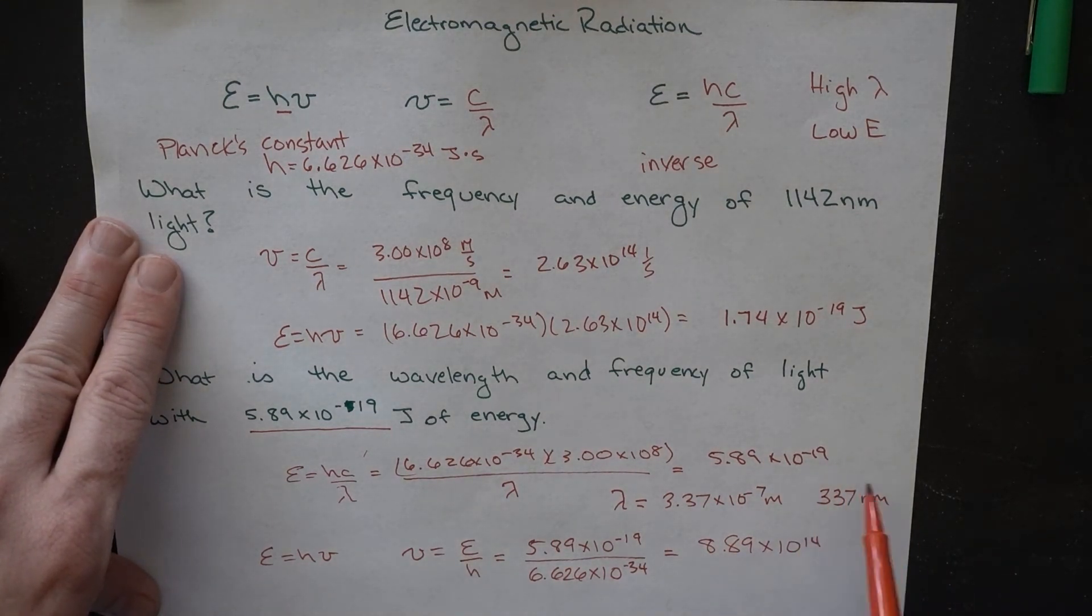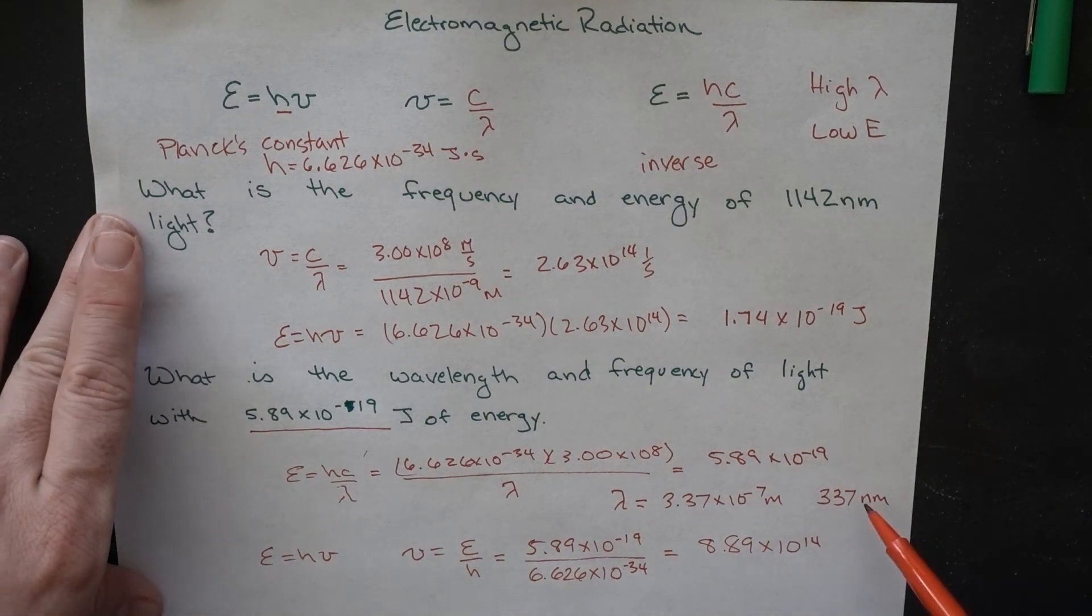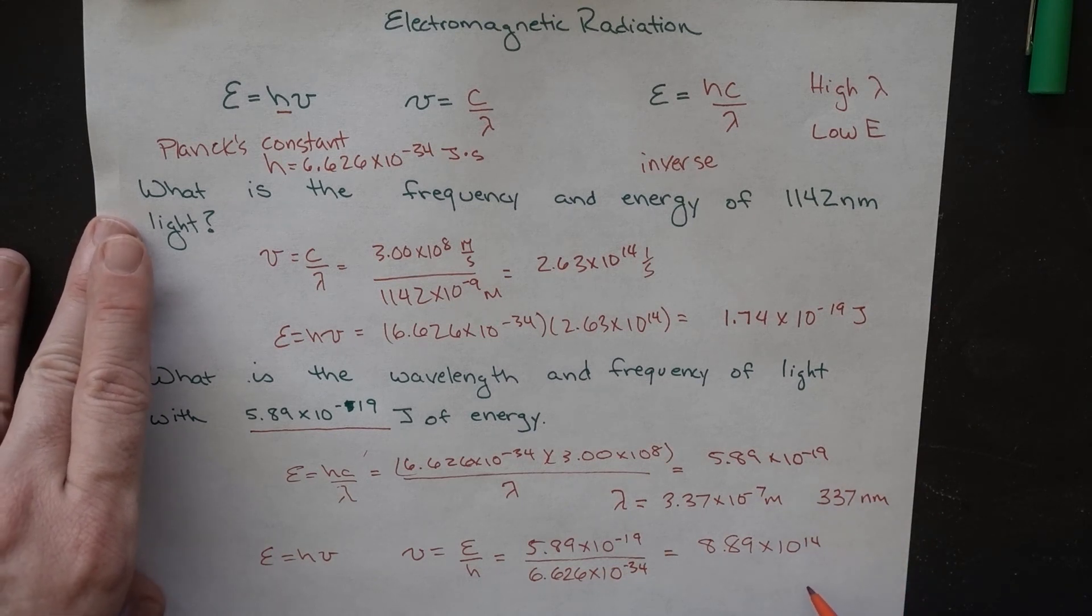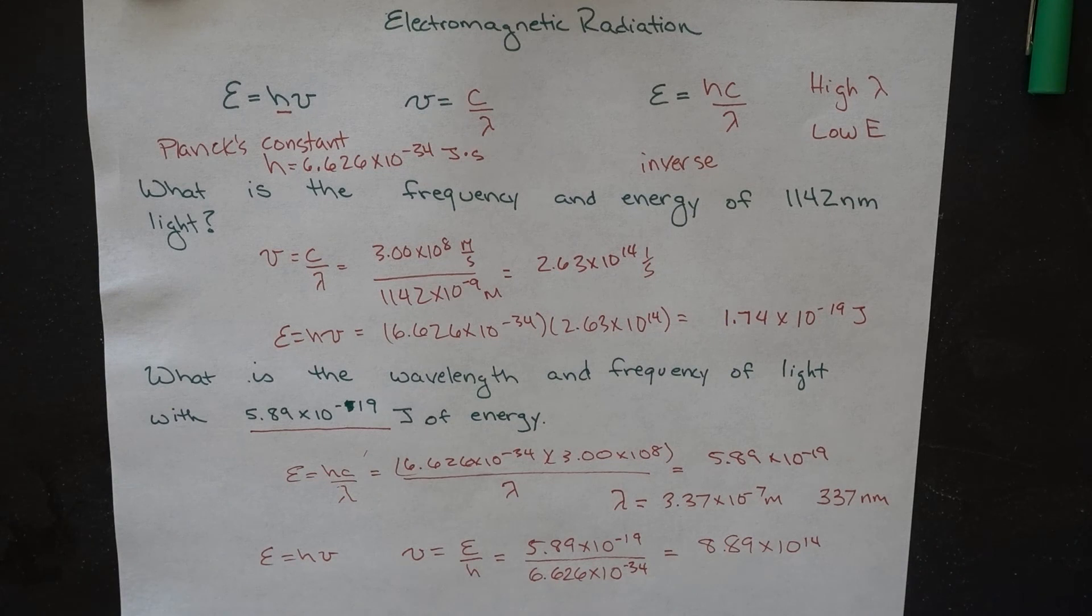Interestingly enough, this corresponds to something that is just shy of visible light. Visible light tends to go from about 400 to 800 nanometers. So, this is just shy of that in the near UV portion. That is an example of some of the problems that we can see there.